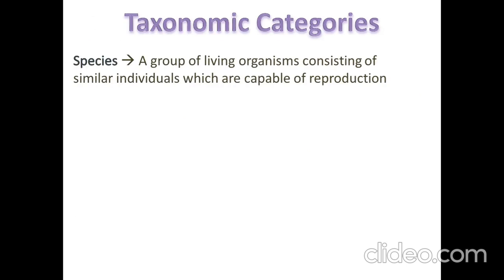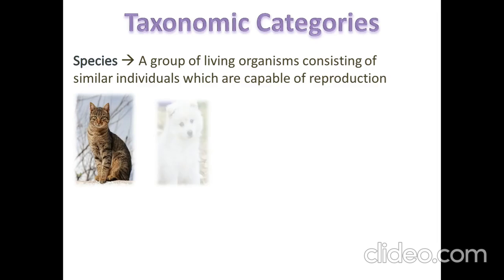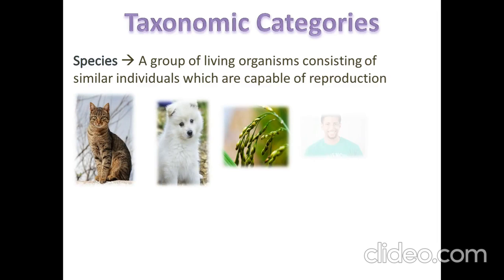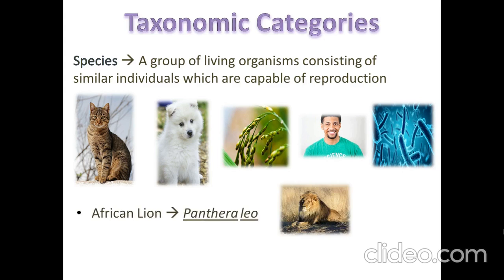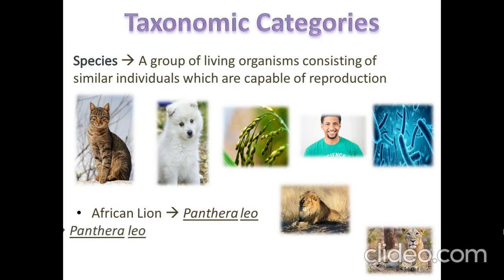Now we will learn about the taxonomic categories, starting from the smallest one: species. A species is a group of living organisms consisting of individuals that can interbreed. They can interbreed among themselves because they belong to the same species — for example, African lion and Asiatic lion.